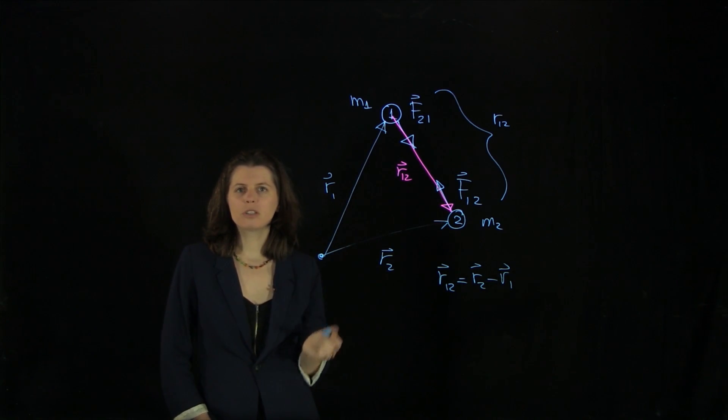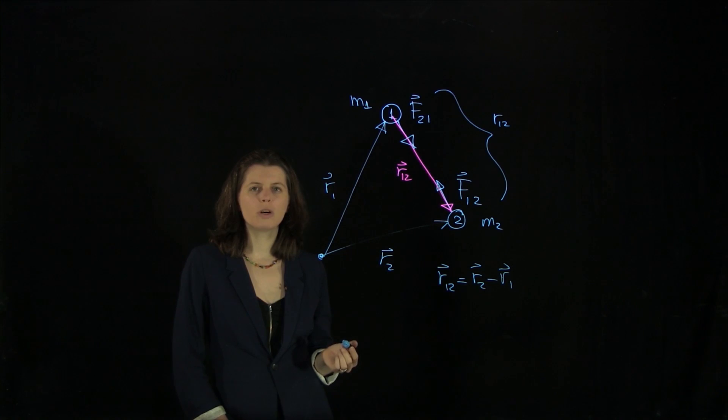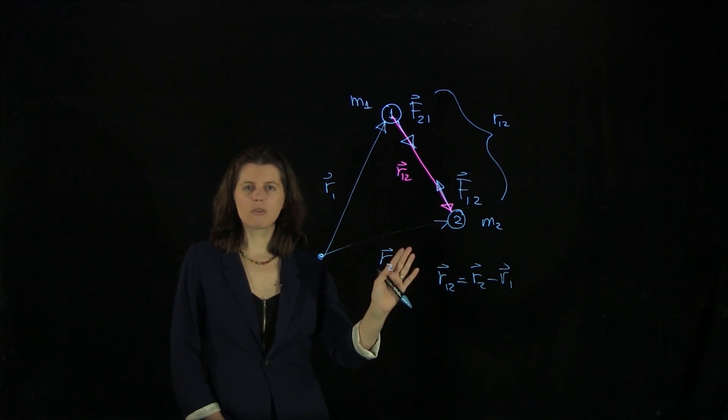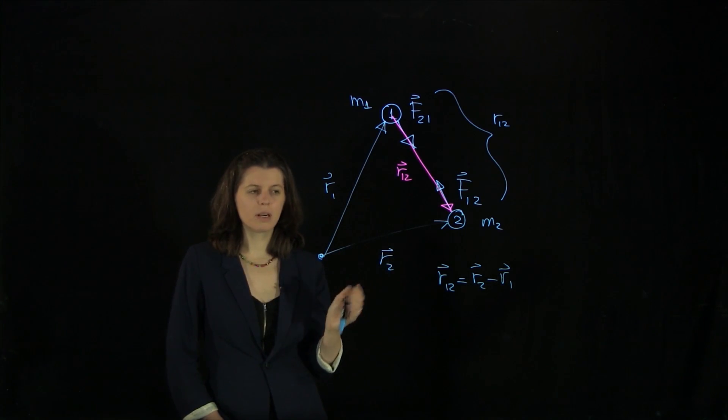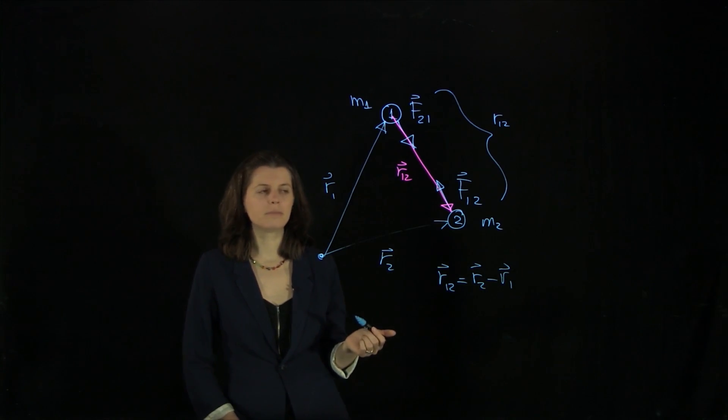But when we deal with the universal law of gravitation, it's actually better to adopt a slightly different coordinate system. Everything in space usually orbits one another. So it's much better to think in a radial direction rather than just normal Cartesian coordinates.